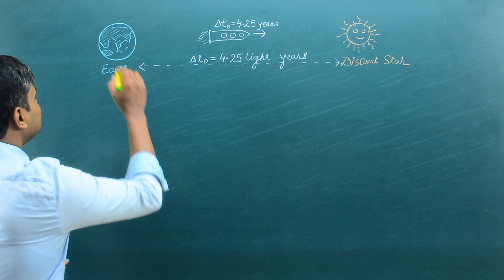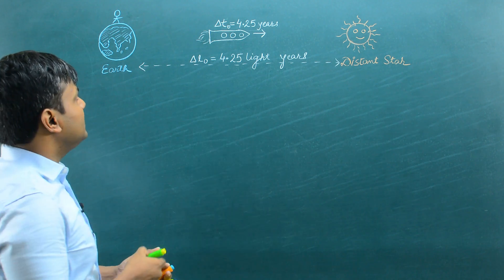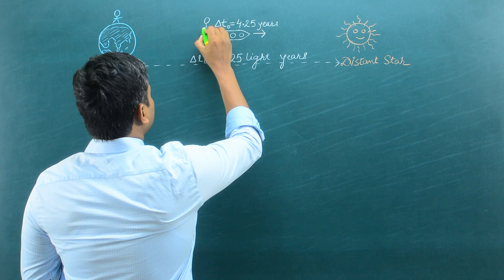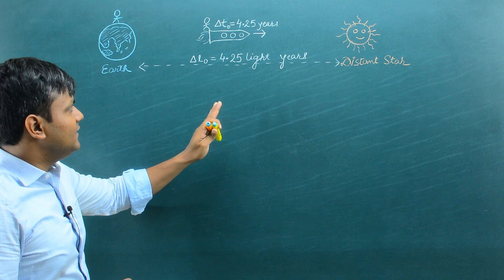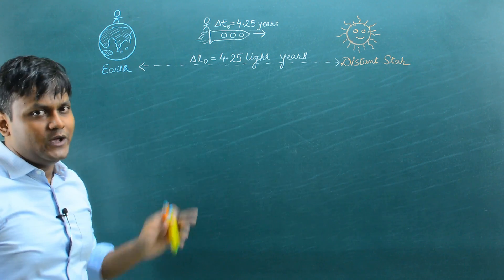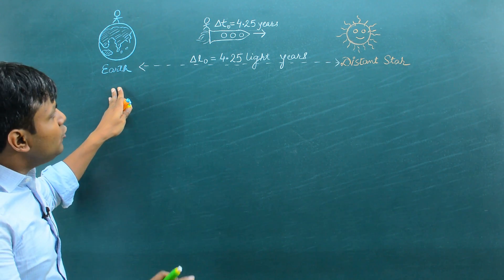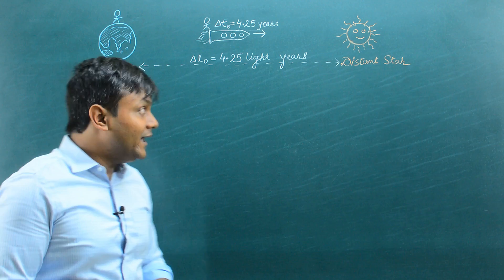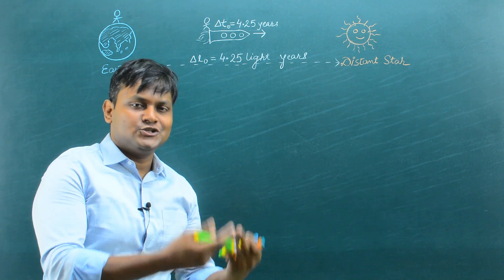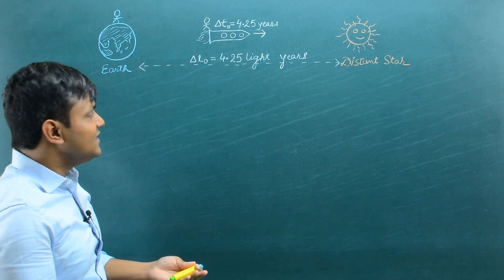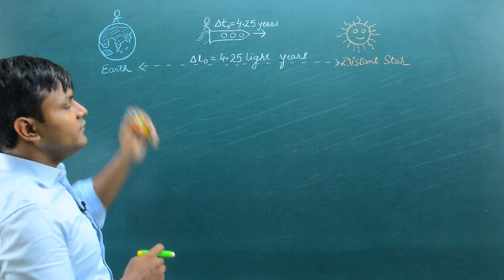We are going to look at the perspective of an observer from the Earth frame of reference, and also from the spaceship frame of reference. The phenomena which is happening depends on which observer we are talking about. For the Earth frame of reference, the phenomena of time dilation is in effect, while for the spaceship observer, the phenomena of length contraction is in effect. But the question asks us what is the speed of the spaceship, and we can calculate that from either observer's perspective.